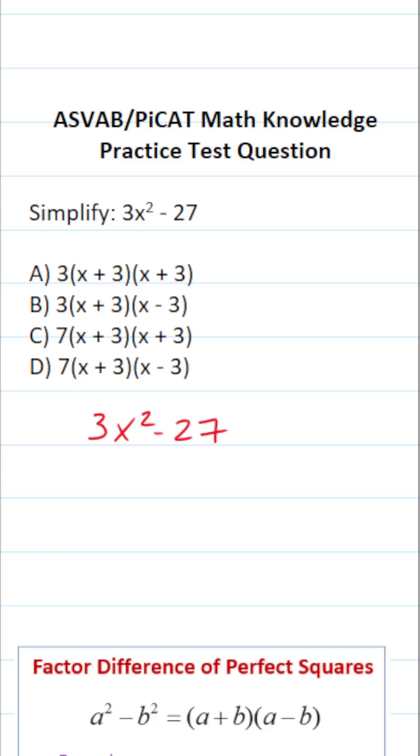In this case I'm going to simplify this expression by first factoring out a common factor of 3. In doing so this leaves me with x squared minus 9 in parentheses.